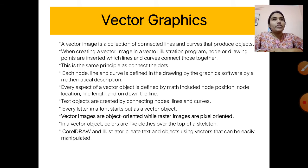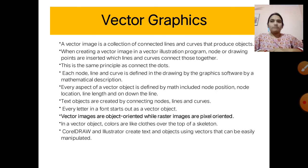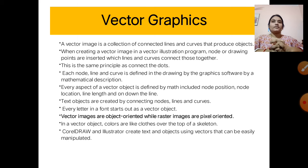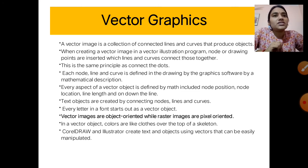When we draw a vector object, we define the node position, node location, line length, etc. The objects are created by connecting nodes, lines, and curves. Every letter in a font starts out as a vector object. Vector images are object-oriented, while raster images are pixel-oriented.